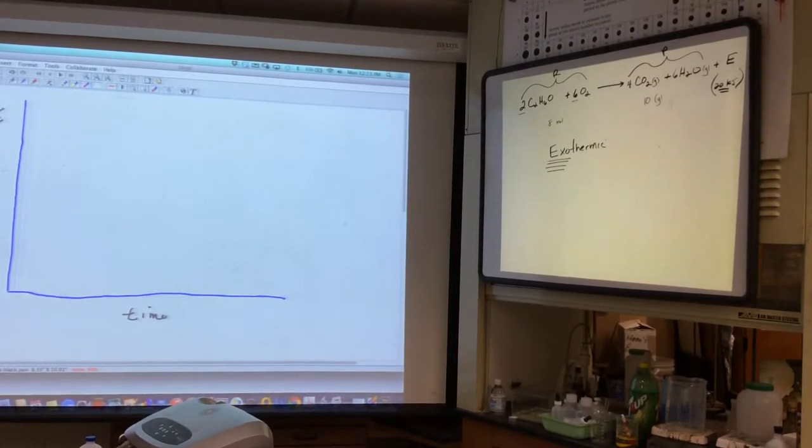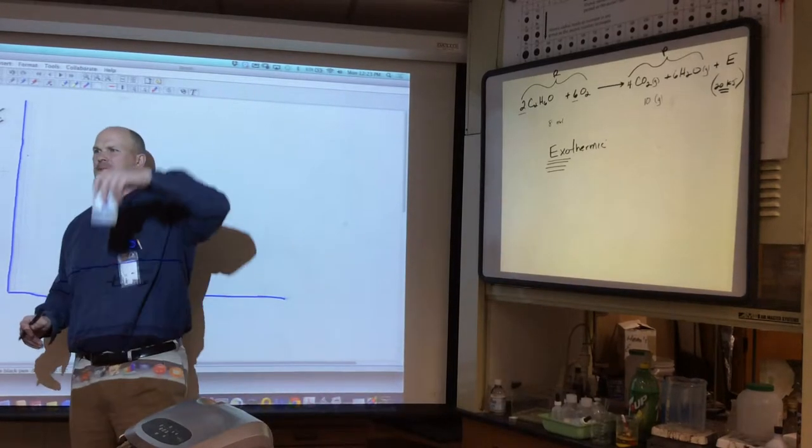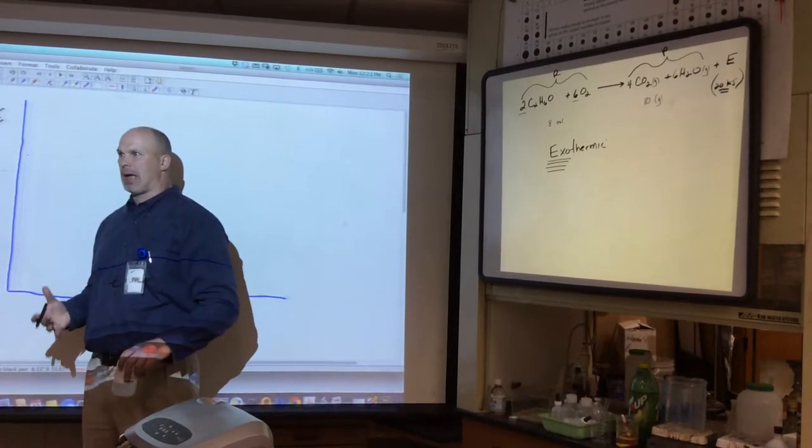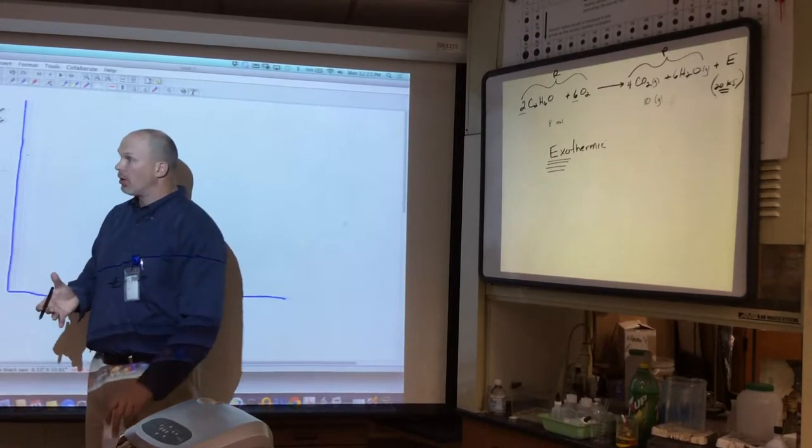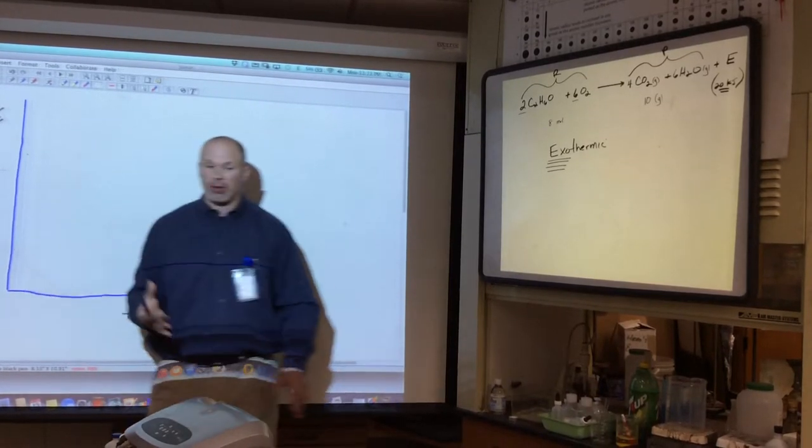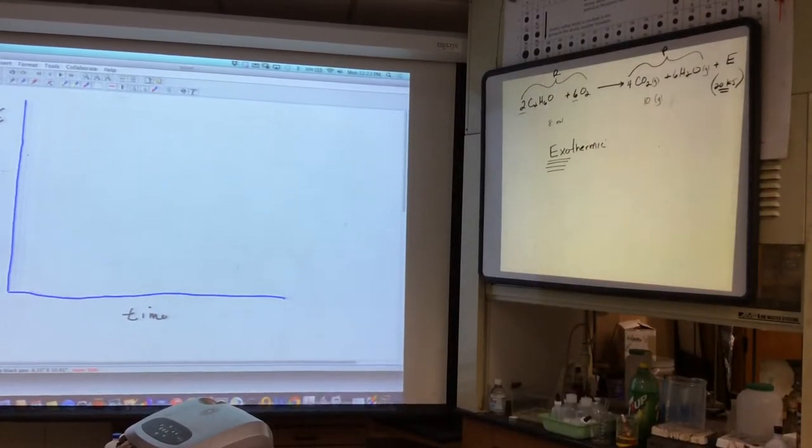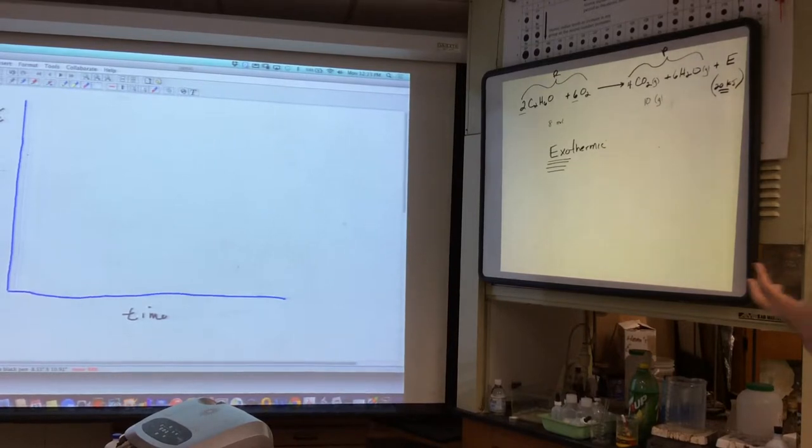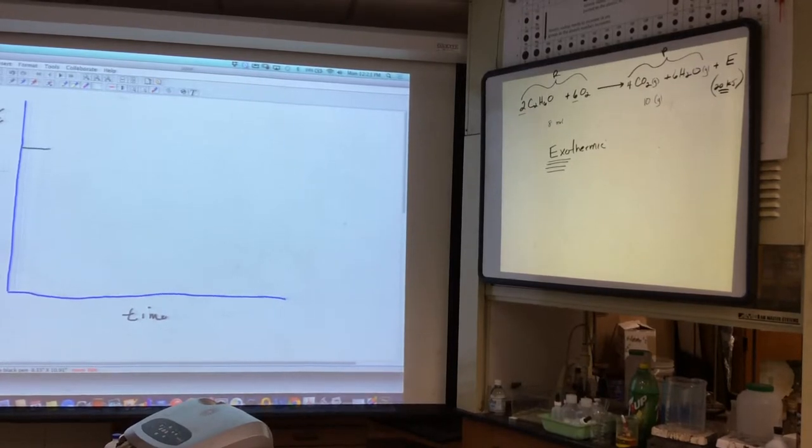Now, when we start a potential energy diagram, we have to evaluate the reactants. So, would you say that ethanol has high potential energy? Does it have potential to do something? Absolutely. You saw what happens when you light or put a spark to ethanol in the presence of oxygen. It lights up. It combusts. It can create pressure if it's enclosed. So, clearly, this has what kind of potential energy? High or low? High.